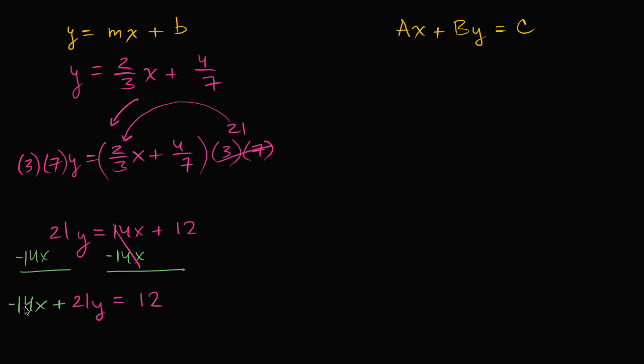14 is divisible by 2, so is 12, but 21 isn't. 14 is divisible by 7, so is 21, but 12 isn't. And 21 and 12 are divisible by 3, but 14 isn't. So I think this is about as simplified as I could get.